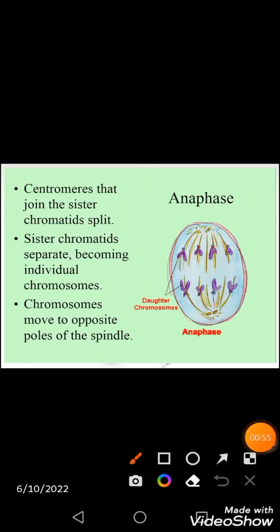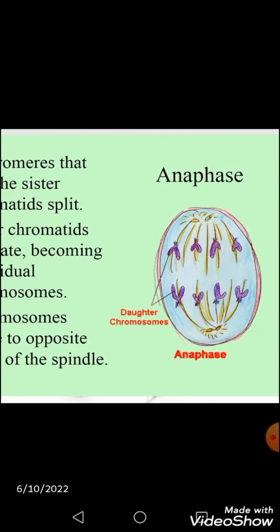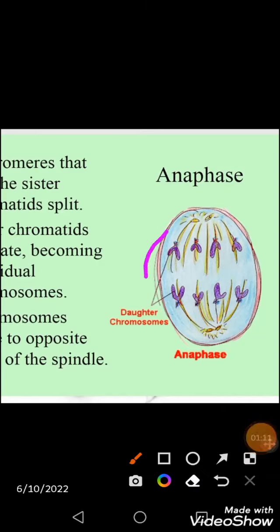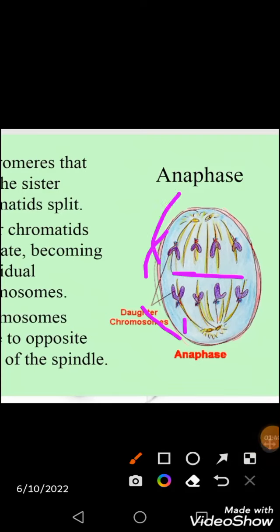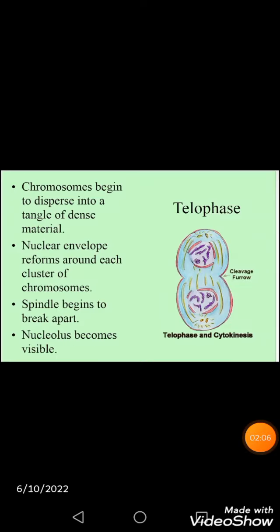In anaphase, the third phase of mitosis, the sister chromatids migrate towards opposite poles of the cell. The centromere splits, separating the sister chromatids. This occurs because the kinetochore microtubules undergo depolymerization, pulling the chromatids toward the poles. A helpful memory aid: 'A' stands for 'away' — in anaphase, chromatids move away from the center toward the poles.